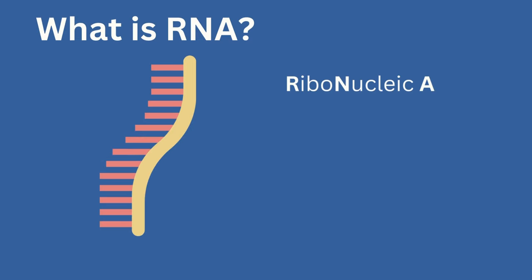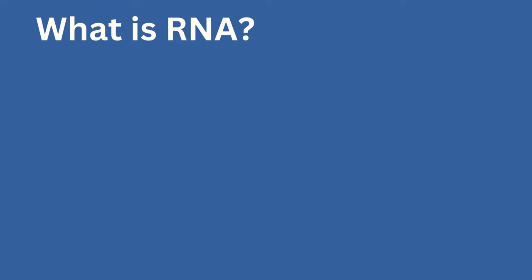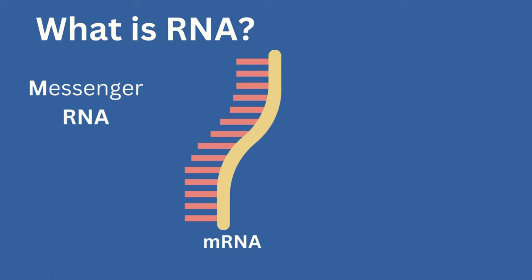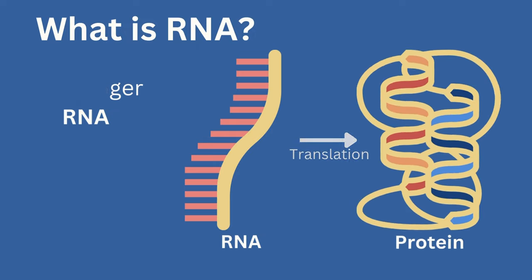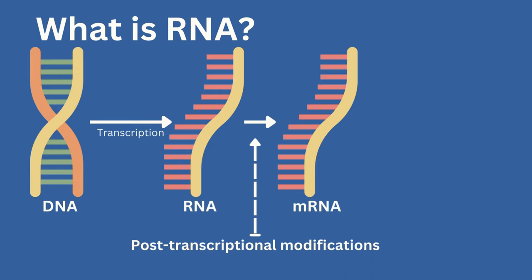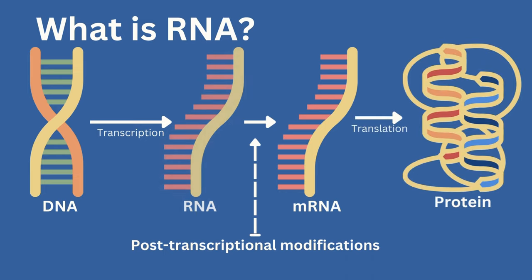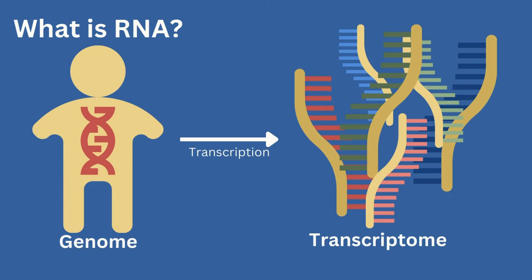RNA, or ribonucleic acid, is a single-stranded molecule that is transcribed from DNA and contains the same nucleotides except thymine is replaced with uracil. While there are many types of RNA, messenger RNA, or mRNA, is a specific type of RNA that contains the genetic instructions to produce proteins through the process of translation. When DNA is transcribed into RNA, a series of post-transcriptional modifications are made to mRNAs before translation can begin. The genome refers to our entire set of DNA, while the transcriptome is the collection of all of our mRNA transcripts.